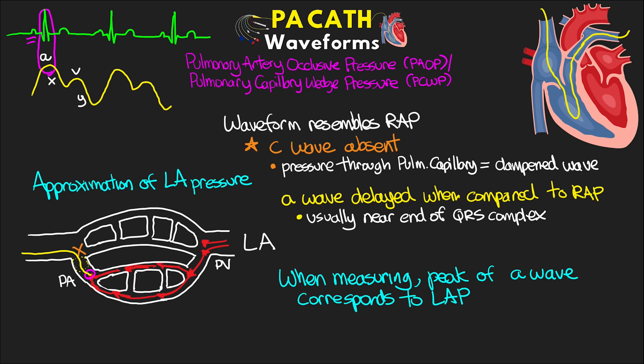That completes the journey of our PA catheter from insertion to its final position. We talked about the four different waveforms seen along the way and their makeup. Remember that typically we won't see the RV waveform continuously, and the pulmonary capillary wedge pressure is only obtained when the balloon is inflated. The right atrial pressure, CVP, and the pulmonary artery pressures are really the only ones we'll have a continuous reading on.